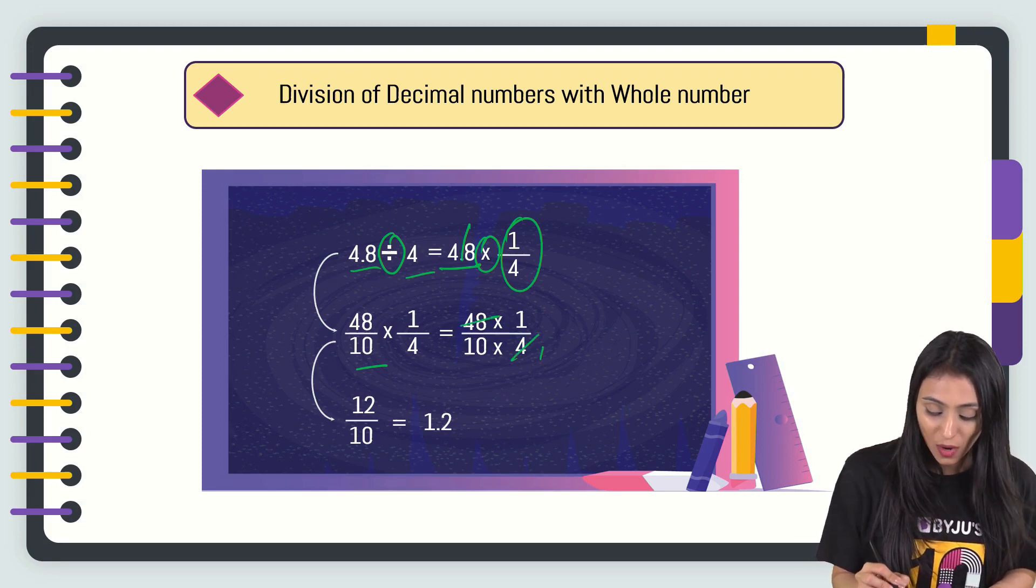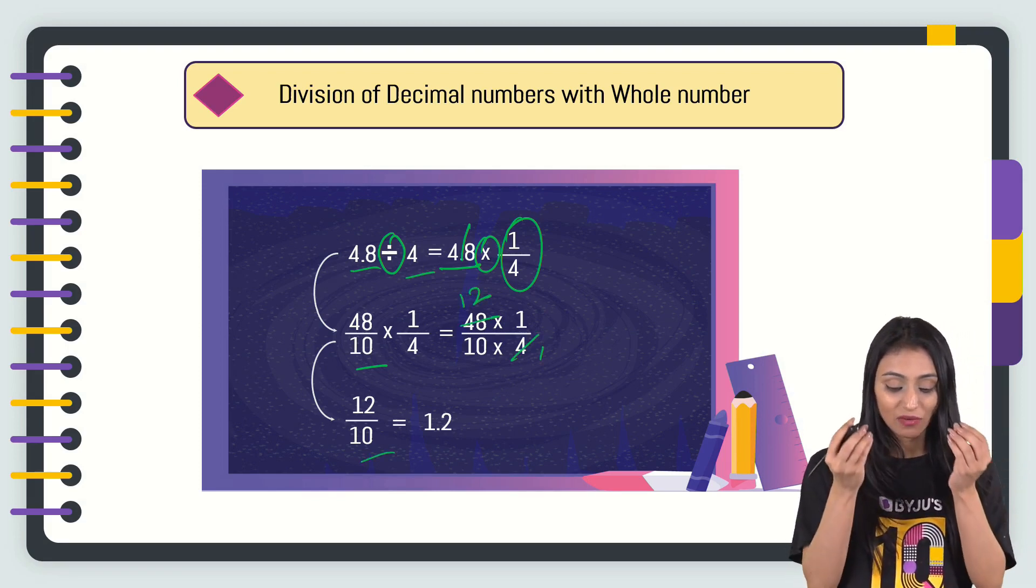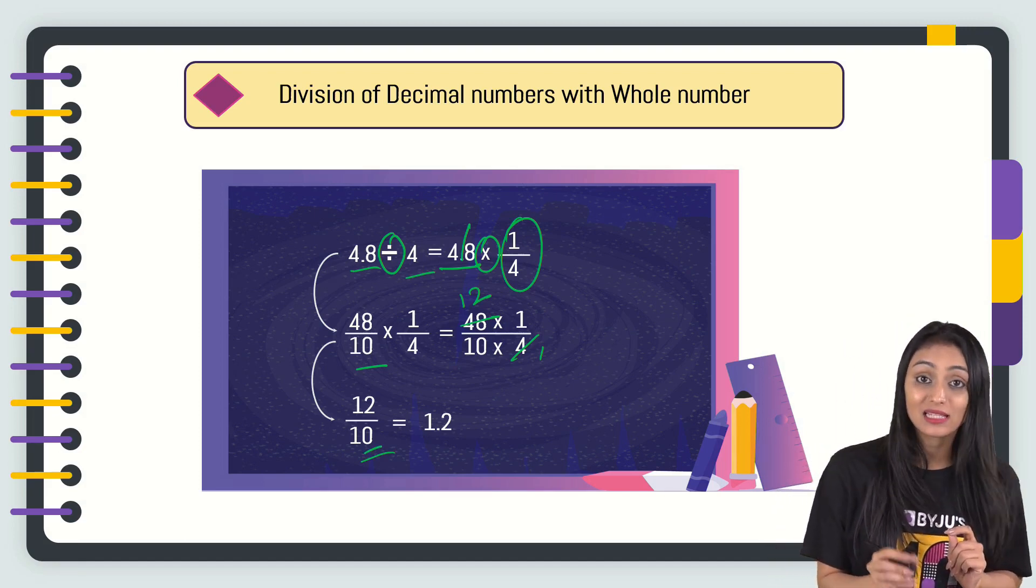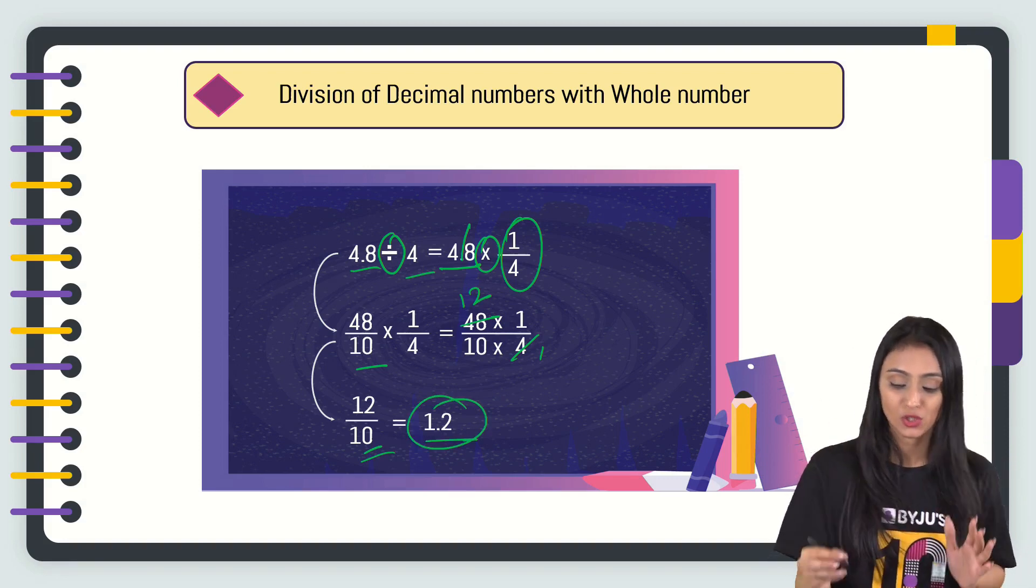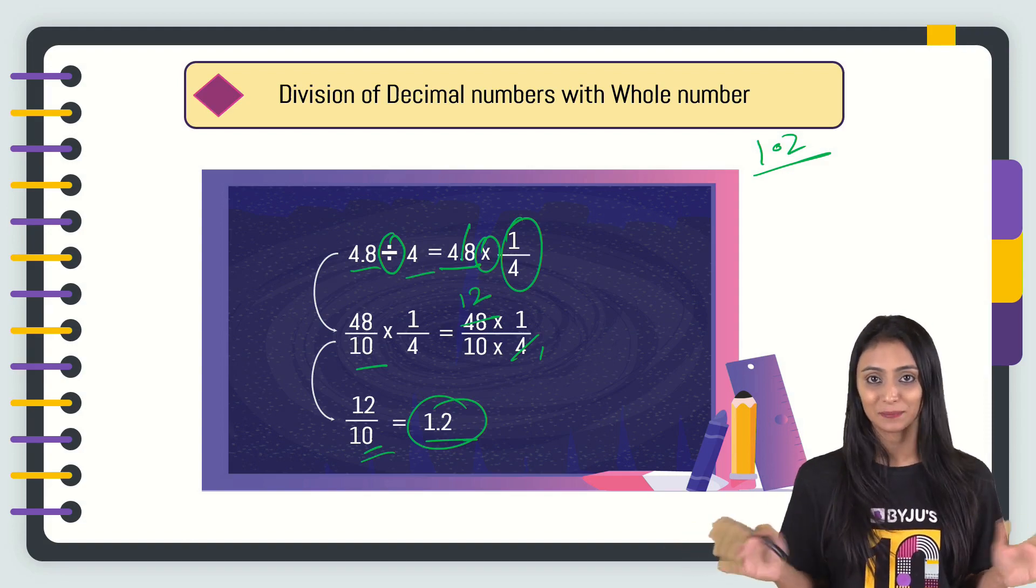Now simply, this is 4 times 1, 4 times 1, 4 times 2. I've got 12 by 10 now. Basically, I'm dividing 12 by 10. There is only one zero in the denominator. So I'll put the decimal after one digit starting from the right. That's going to be 1.2. In 12, starting from right, I'll put decimal here. 1.2 would be the answer. Simple.